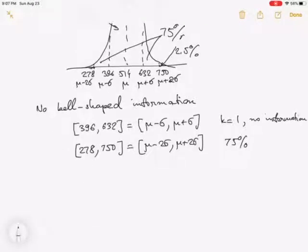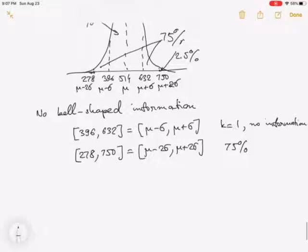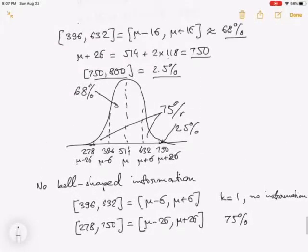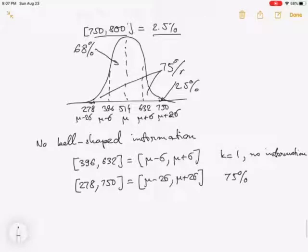Now, what could we say if there is no bell-shaped information? If there is no bell-shaped information, then for the interval 396 to 632, this is the interval from mu minus 1 sigma to mu plus 1 sigma. In this case, k equals 1 and Chebyshev's rule cannot say anything, because Chebyshev's rule works only when k is more than 1.